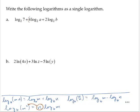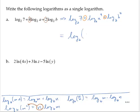Looking at this first example, I have a 4 times the log base 2 of a, and a 2 times the log base 2 of b. So I can rewrite this as the log base 2 of 7 plus the log base 2 of a to the fourth plus the log base 2 of b to the second. Now I have additions between logarithms with the same base, so I can rewrite that as log base 2 of the single quantity 7 times a to the fourth times b to the second.